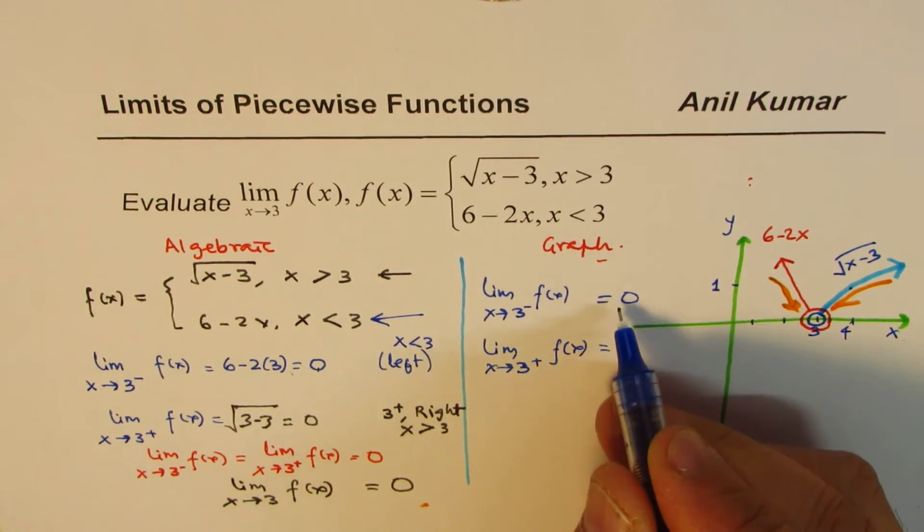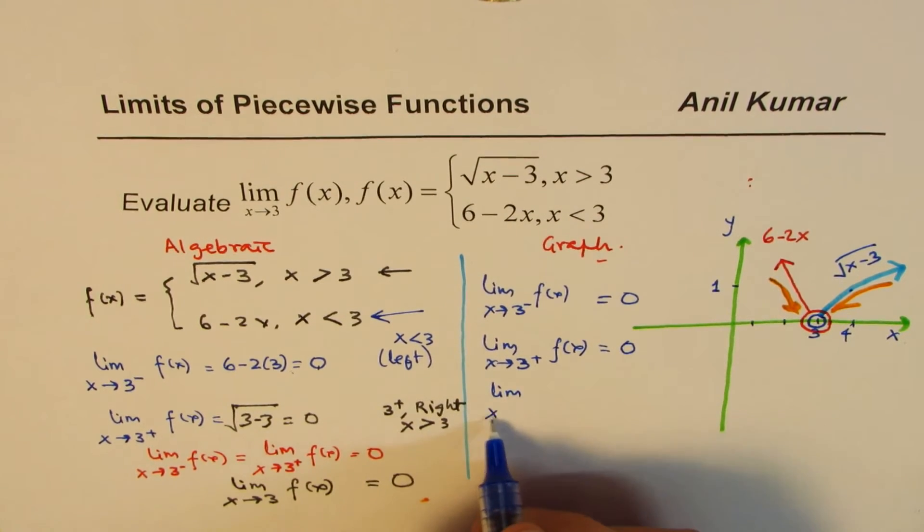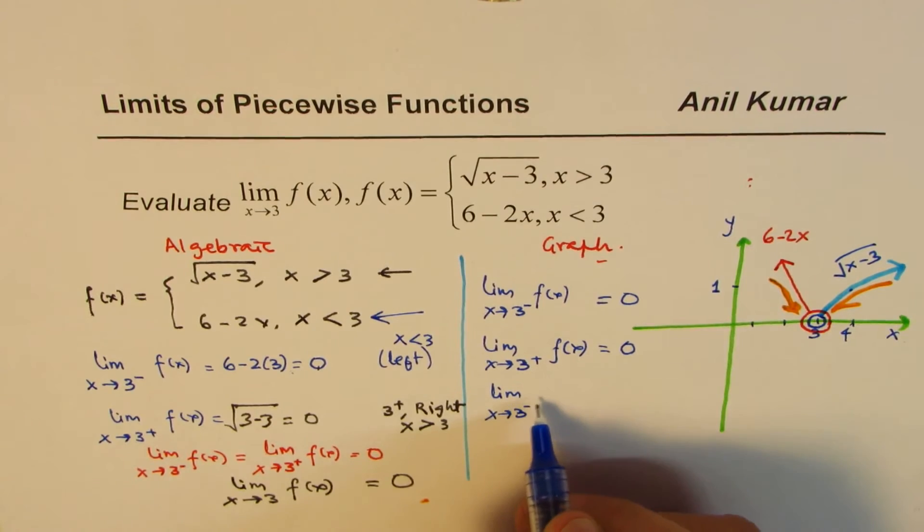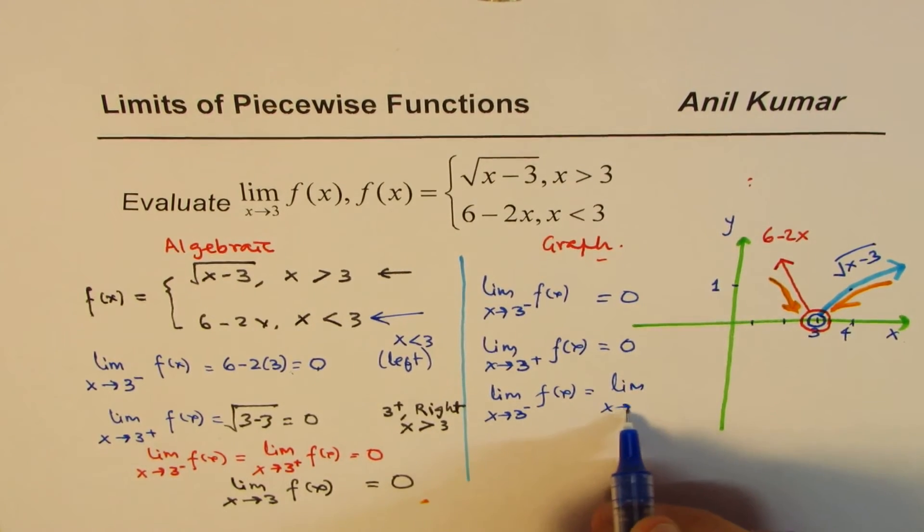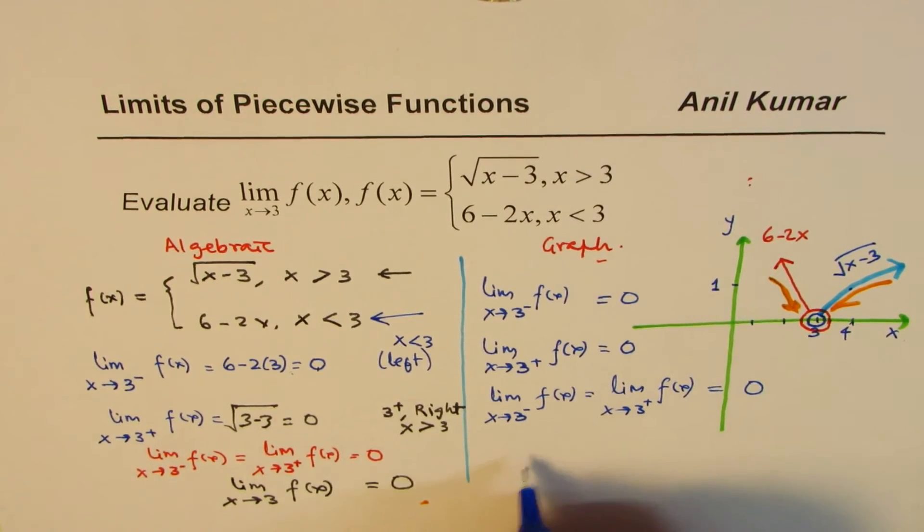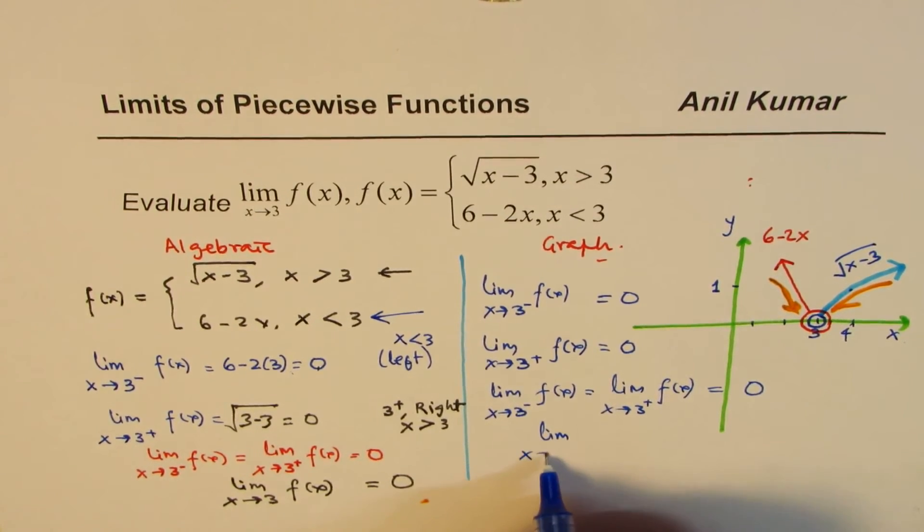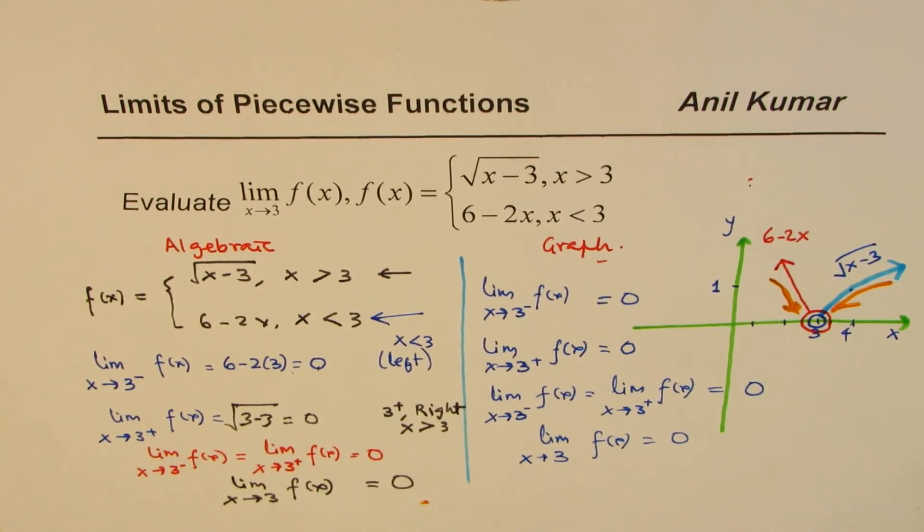Since both are 0, so the same logic. Limit x approaches 3 from the left side for the function is same as the limit x approaches 3 from the right side of this function. Both are equal to 0. Therefore, limit when x approaches 3 for f of x is indeed equal to 0. And that is how you have to solve it.